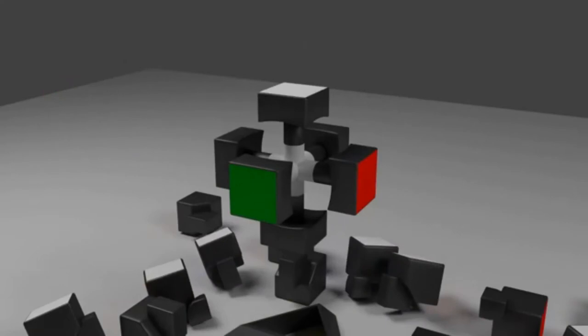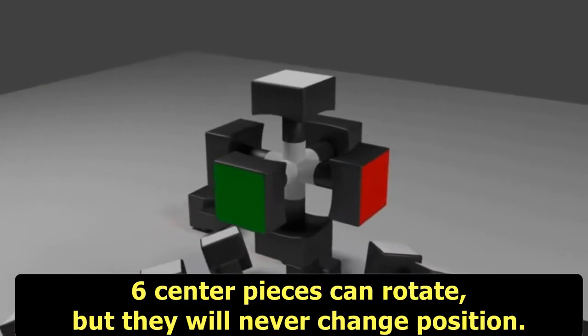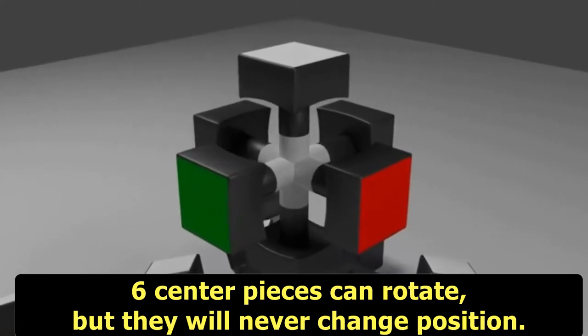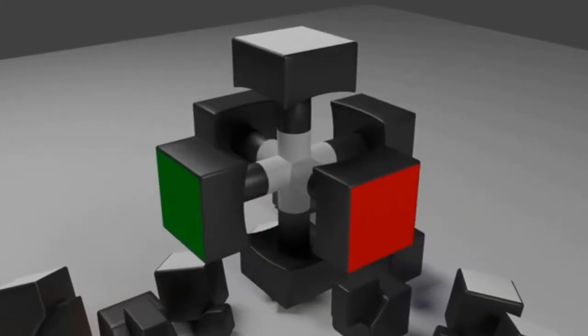The skeleton of the cube holds the 6 center pieces for each side. These pieces can rotate, but they will never change position. For example, the red center will always be across from the orange center.